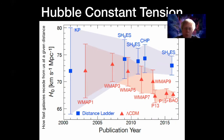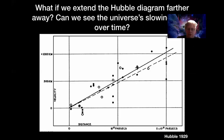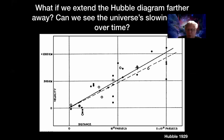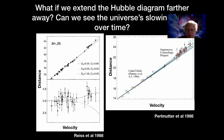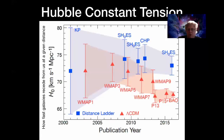This first hint is called the Hubble constant tension. The Hubble constant is basically just the slope of the line in Hubble's diagram — how fast does this line rise, how much further do you have to get away to get a certain change in expansion velocity. Since Hubble's time, we've learned a lot of different ways to measure this, and two different ways now seem to be giving slightly different answers.